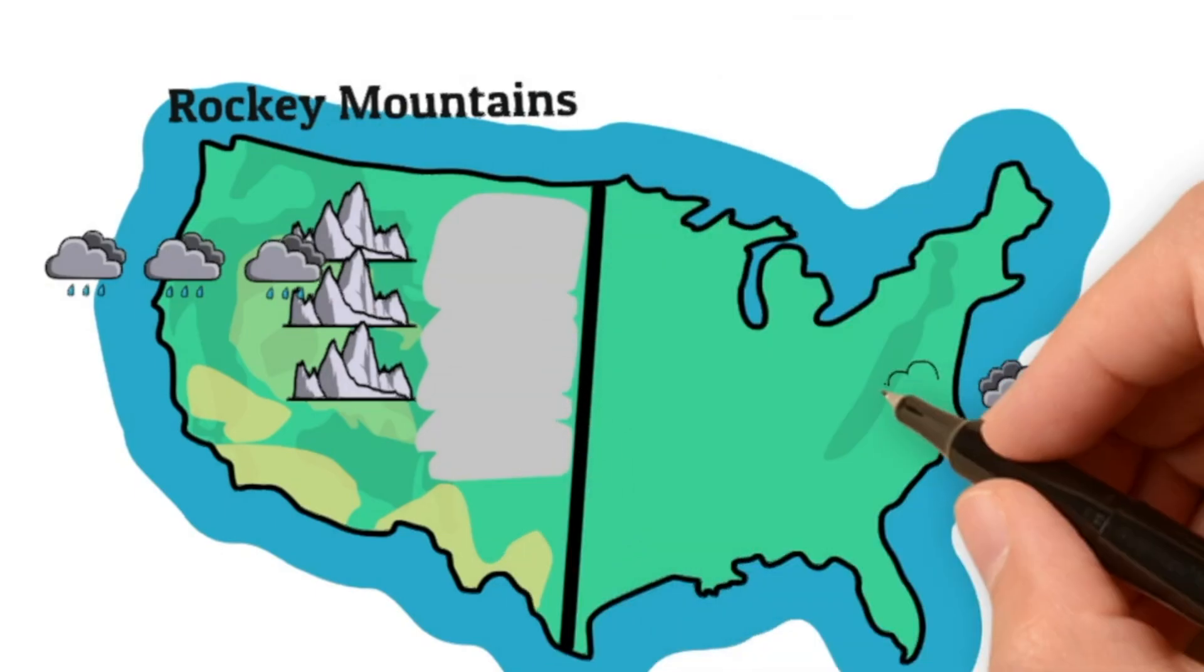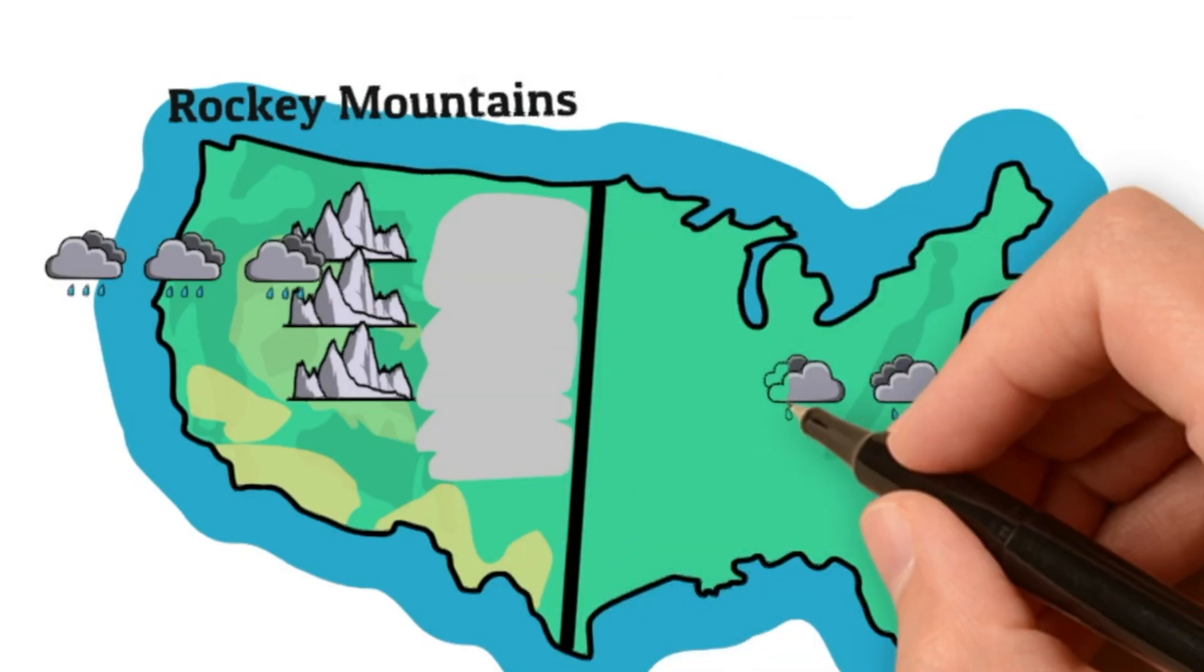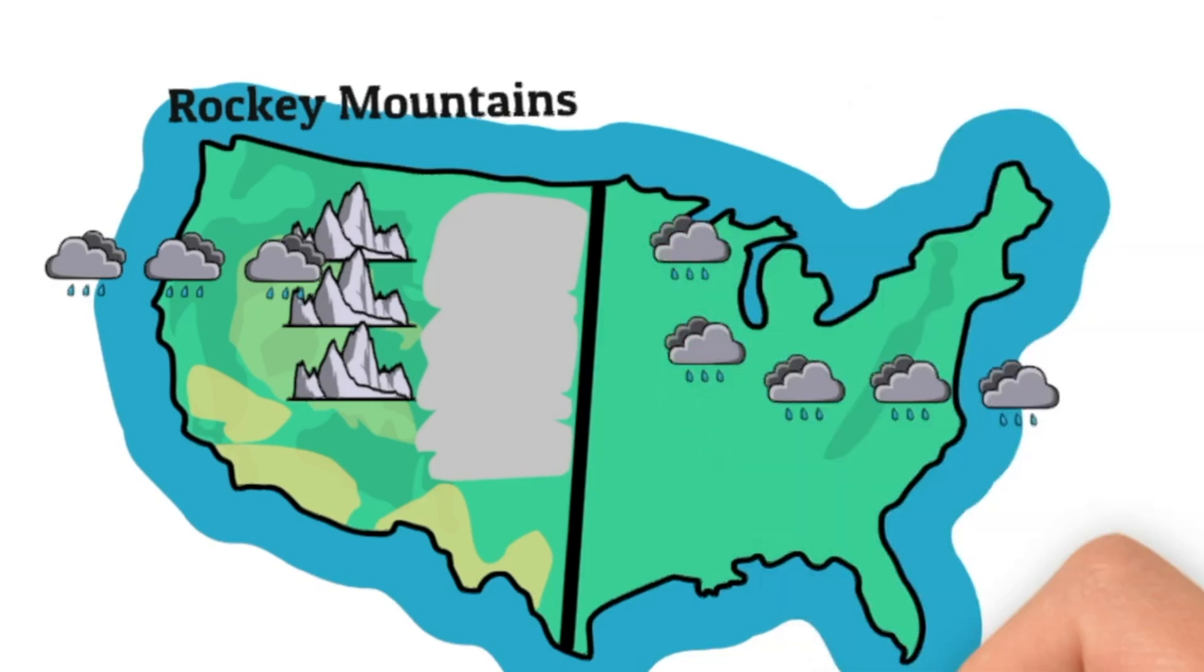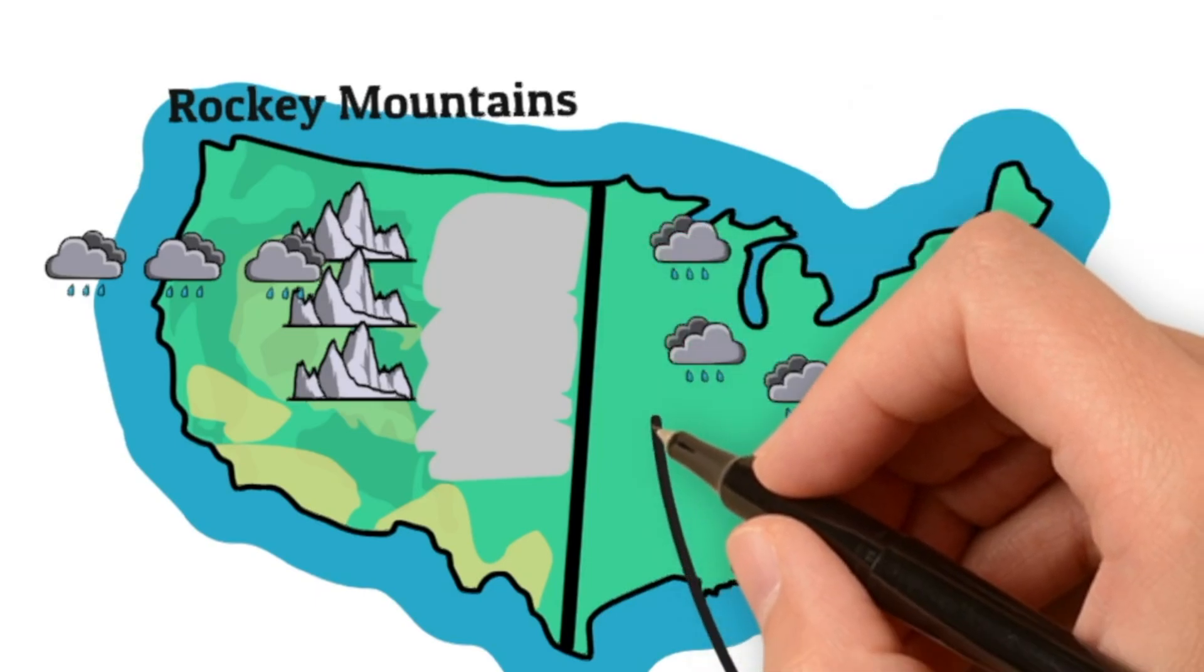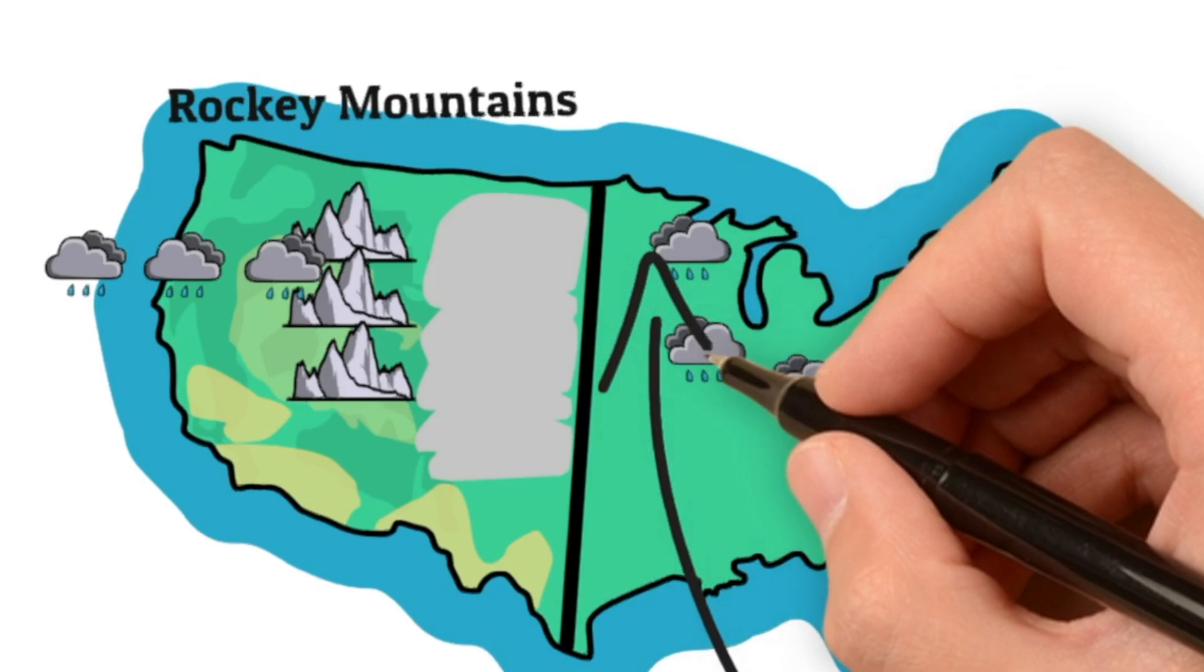At the same time, precipitation from the east can easily penetrate into the depths of the country, but precipitation due to winds from the Gulf of Mexico cannot cross this line as it changes its direction.